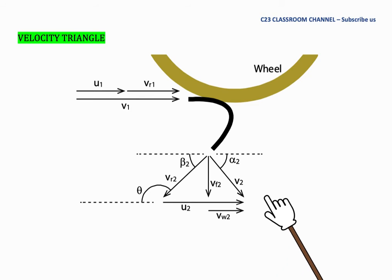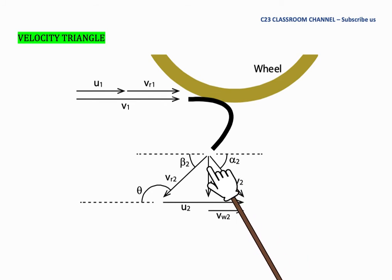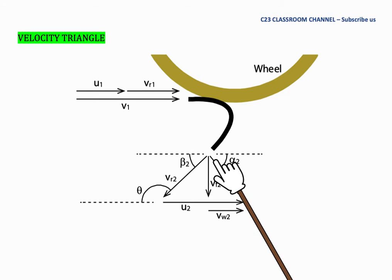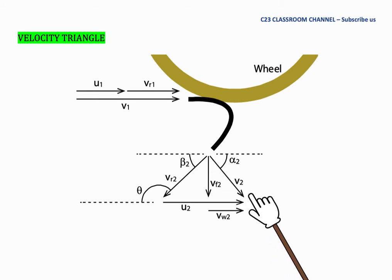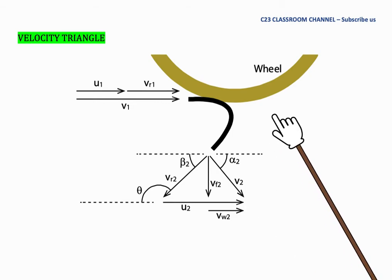The key idea when drawing the velocity triangle at inlet and outlet is that all component velocities must form a closed loop — the absolute velocity must close the loop — because V2 represents the actual real velocity of the Pelton Wheel.